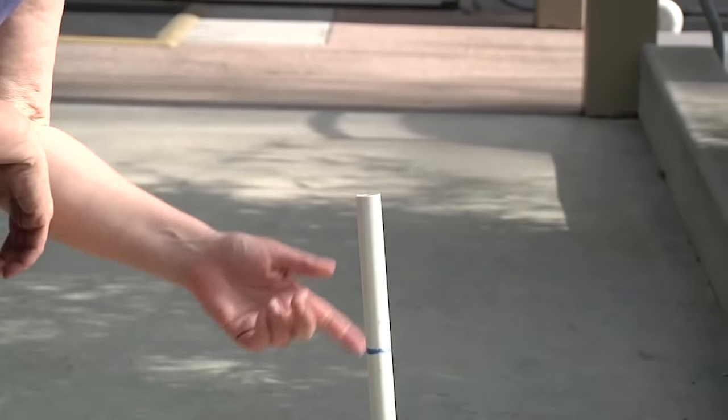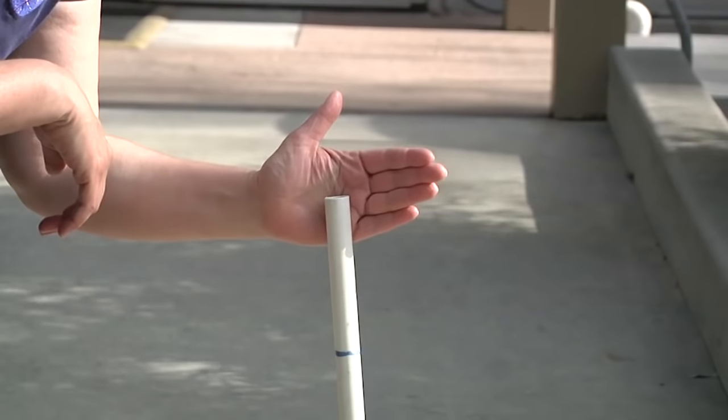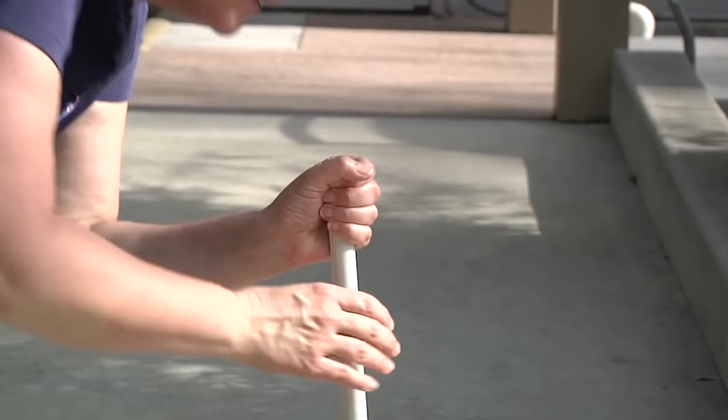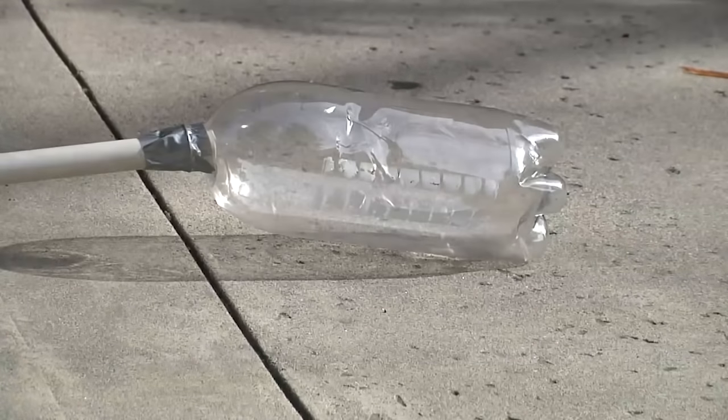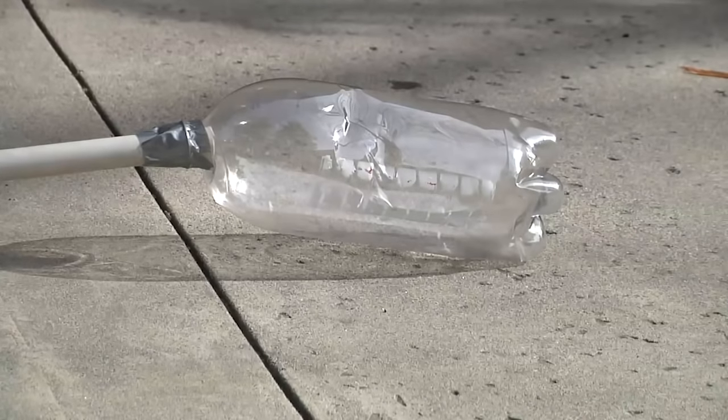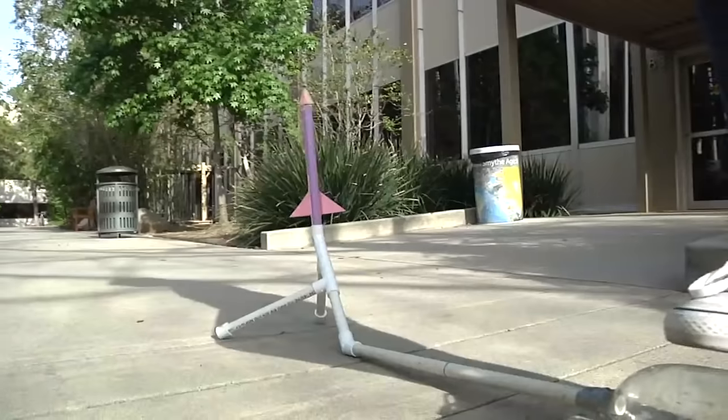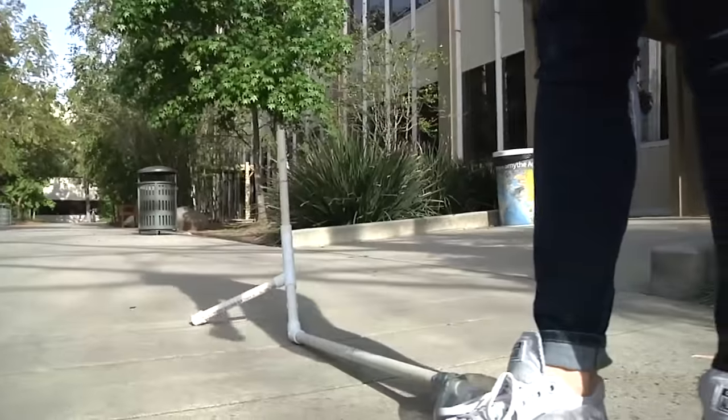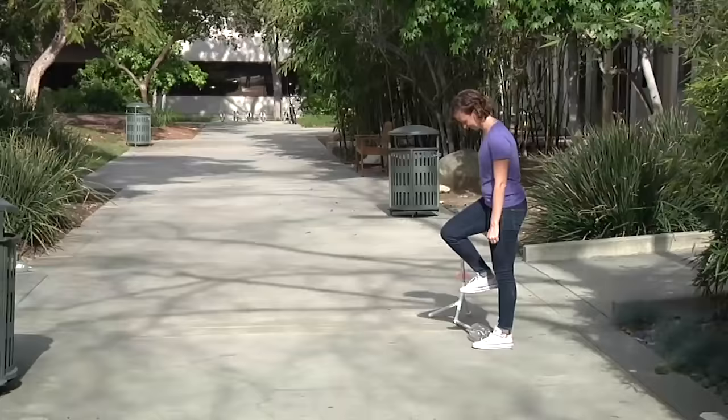In order to easily reinflate the bottle, place your hand over the PVC pipe, blow, and now your bottle is reinflated. You can use these bottles over and over again for dozens of times as long as you're careful with them.